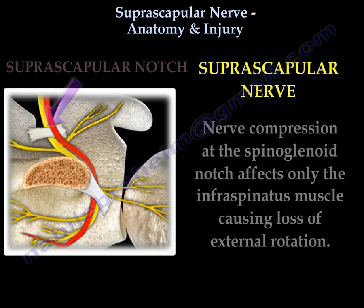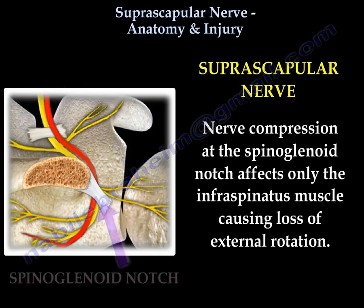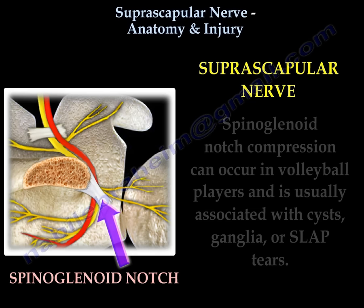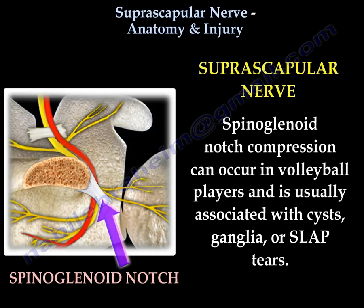Nerve compression at the spinoglenoid notch affects only the infraspinatus, causing loss of external rotation. This spinoglenoid notch compression can occur in volleyball players and can be associated with cysts, ganglia, or SLAP tears.